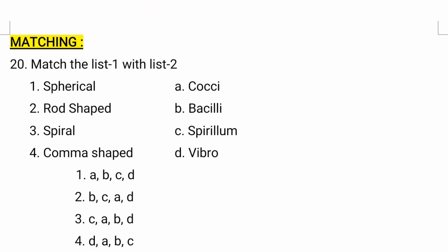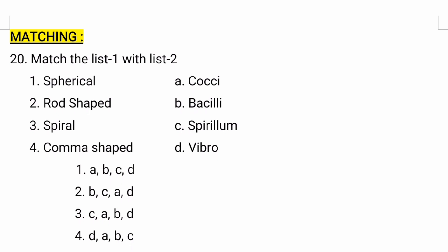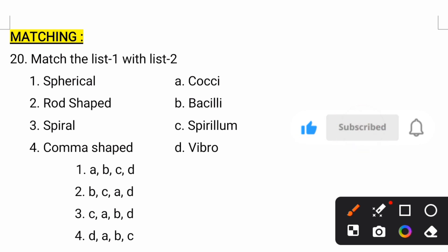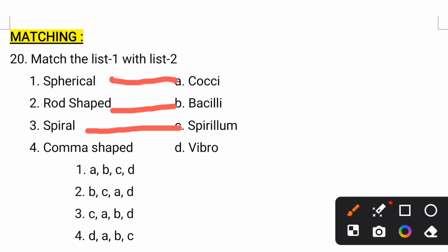Next is the matching type category — you have to match List 1 with List 2 based on bacterial shapes. Spherical-shaped bacteria are called cocci. Rod-shaped bacteria are called bacilli or bacillus. Spiral-shaped bacteria are called spirilli or spirillum. Comma-shaped bacteria are referred to as vibrio.